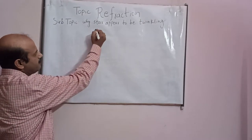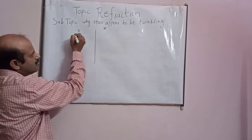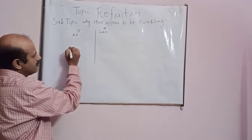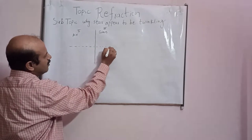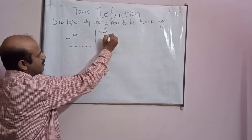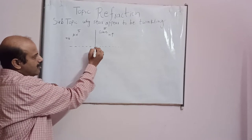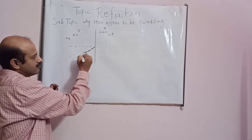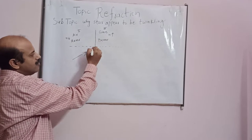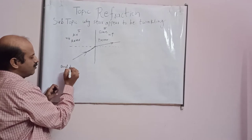Suppose this is the interface. Interface means this is the first medium and this is the second medium. Suppose I am taking this medium to be air and this medium to be glass. You already know refractive index of air is less as compared to refractive index of glass, so I have drawn the arrow upward. N stands for refractive index. When light travels from air to glass, it is travelling from rarer to denser medium. It will bend towards the normal.